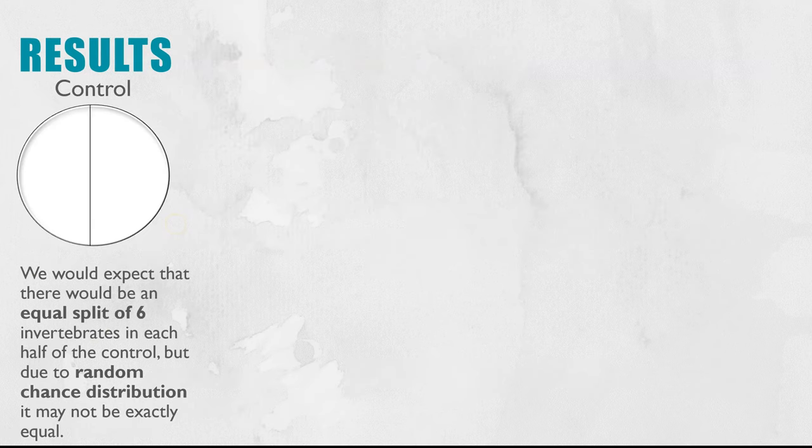Next is the results and I'm actually going to go through what we'd expect first of all before I share with you my results. The control: we want to show that it is the independent variables are causing any difference so we'd expect in the control to have an equal split six on either side. That might not be the case though because there is still random chance distribution of those invertebrates.